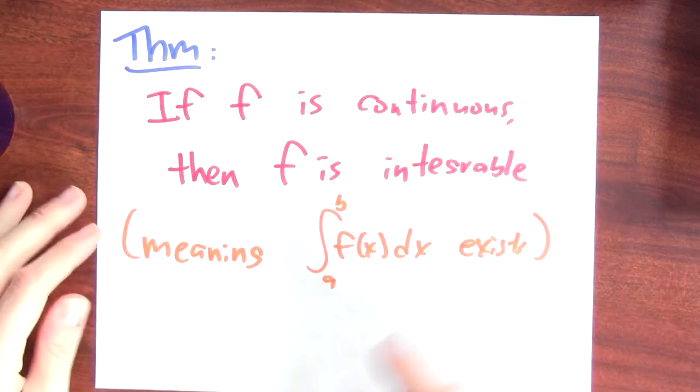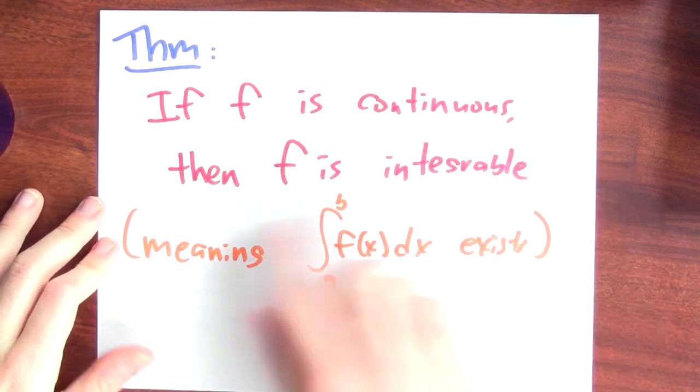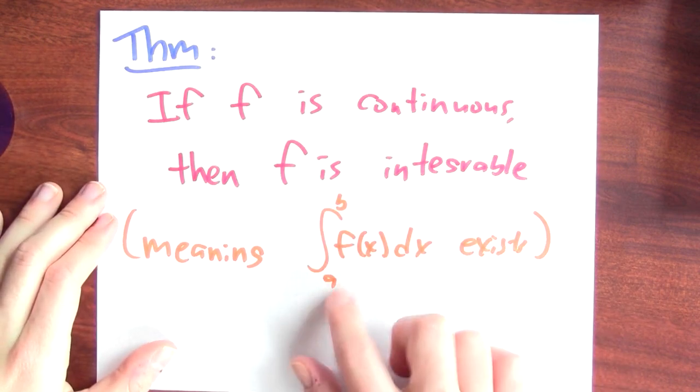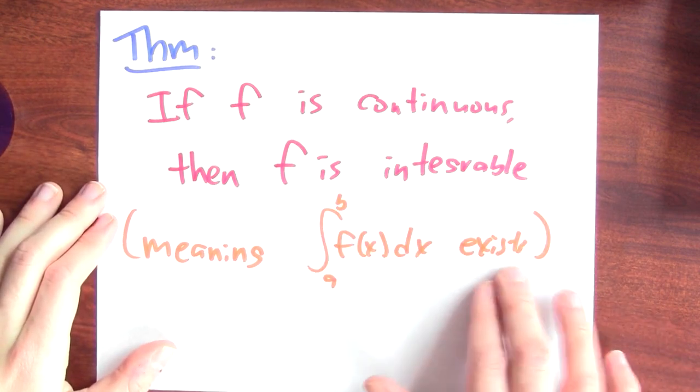There's no guarantee whatsoever that that limit actually exists. On the other hand, here's a theorem. If a function f is continuous, then it's integrable, meaning that the integral of the function from, say, a to b actually exists.